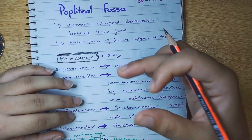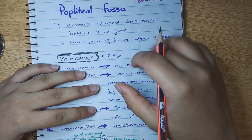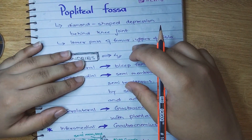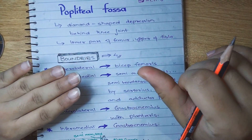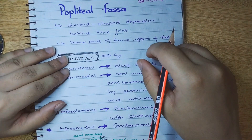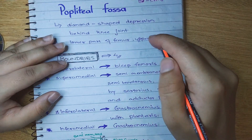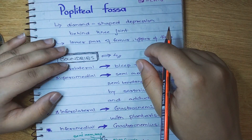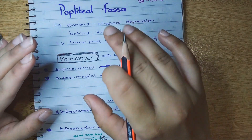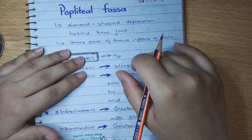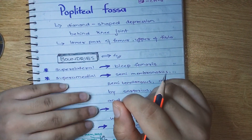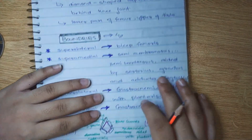It is almost behind the knee joint. It is a diamond-shaped depression behind the knee joint. We have to remember that it is behind the knee joint, and at the lower part of the femur and upper part of the tibia. This is our popliteal fossa.